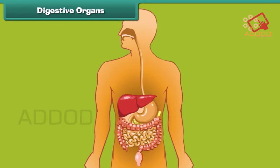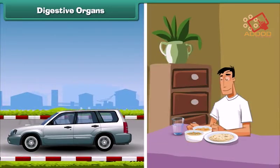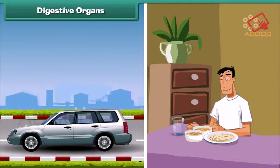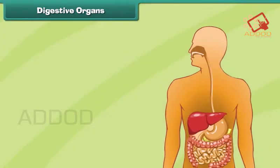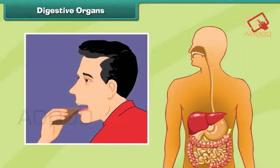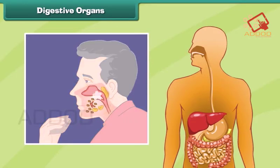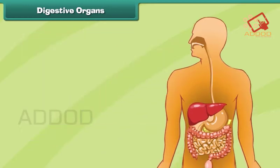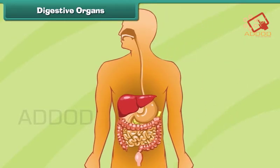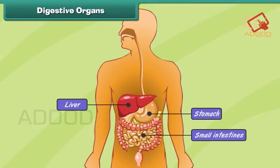Digestive organs: like machines, the human body also requires fuel to perform work. The food that we eat every day serves as the fuel for our body. The food eaten by a human being is broken down into smaller pieces to obtain energy — this process is called digestion. Some main organs that help in digestion are the liver, stomach, and small and large intestines.